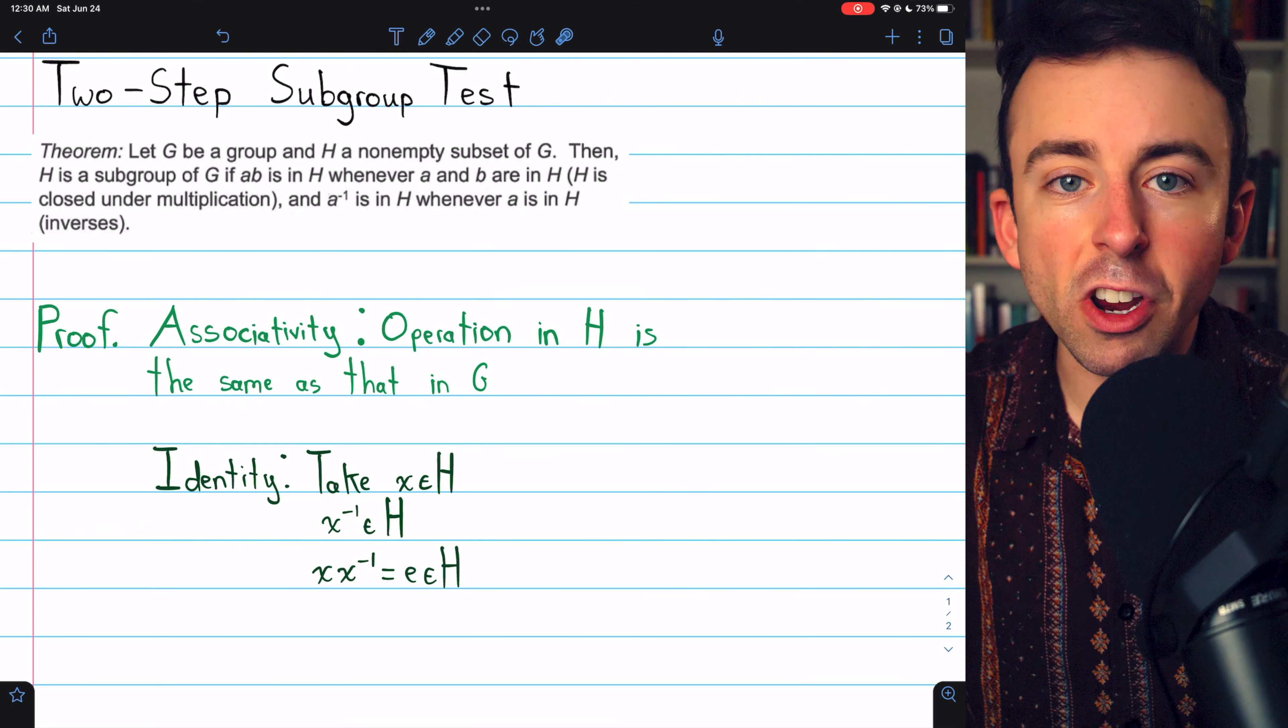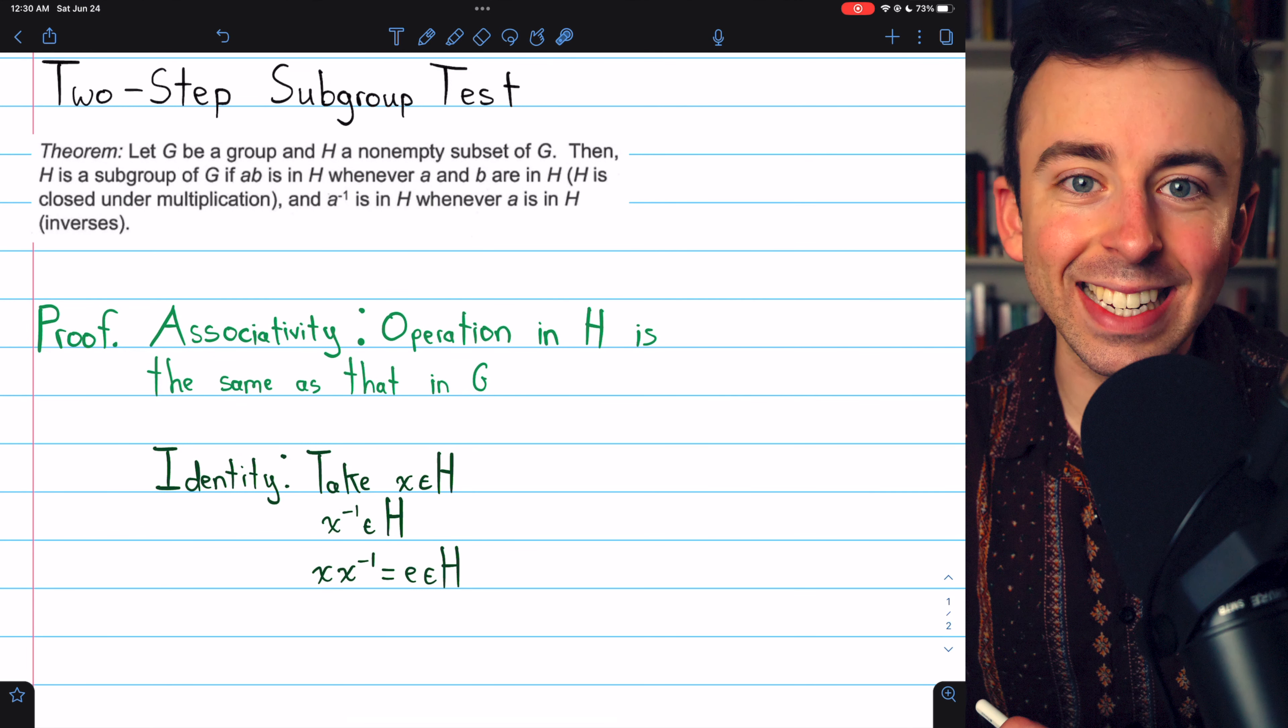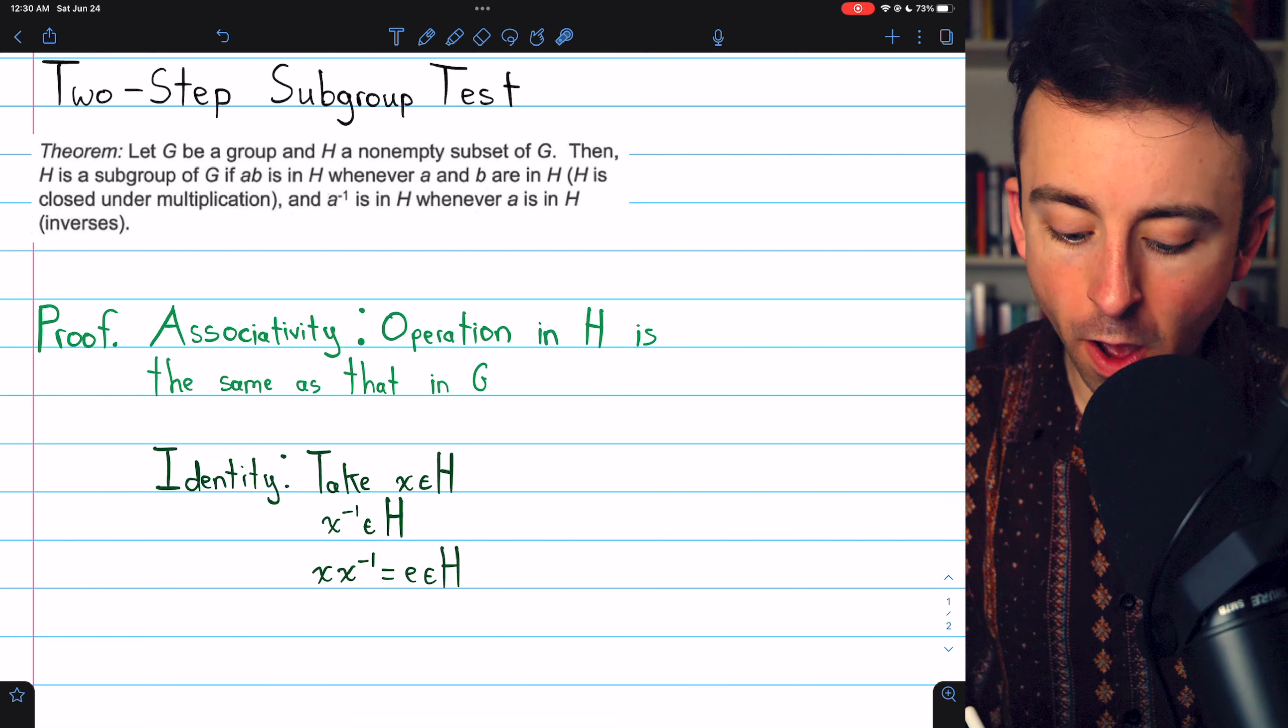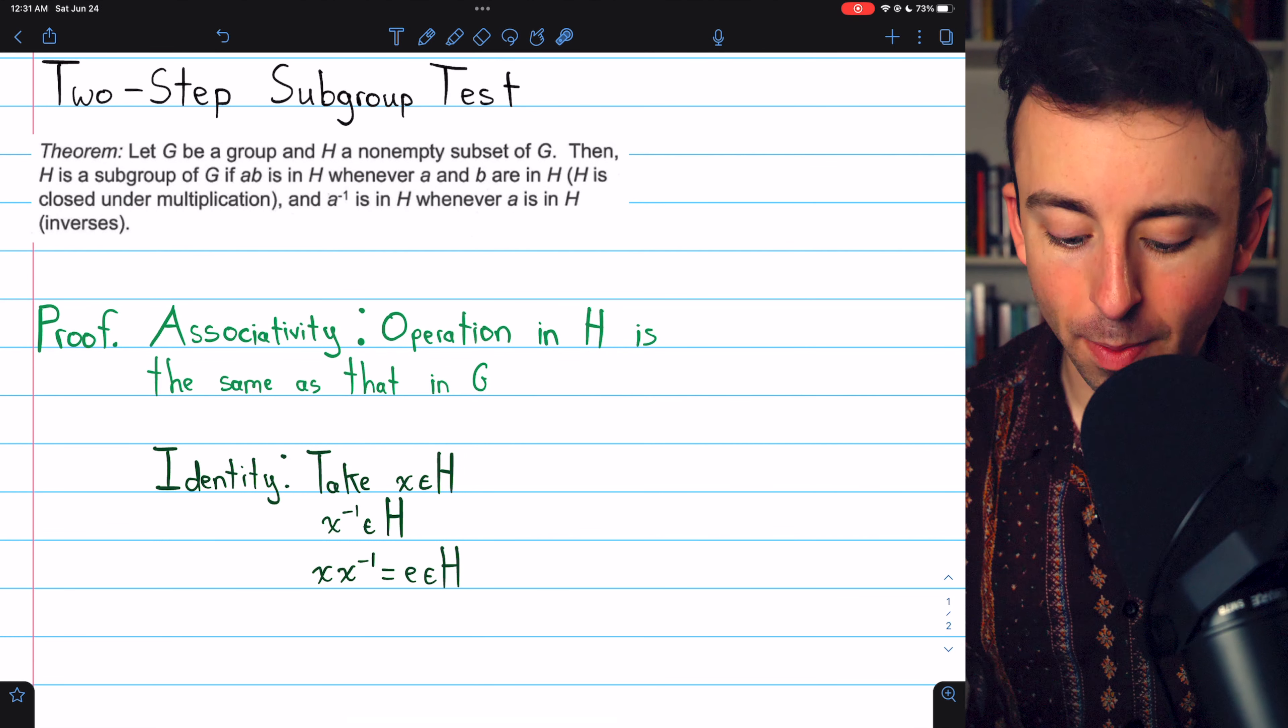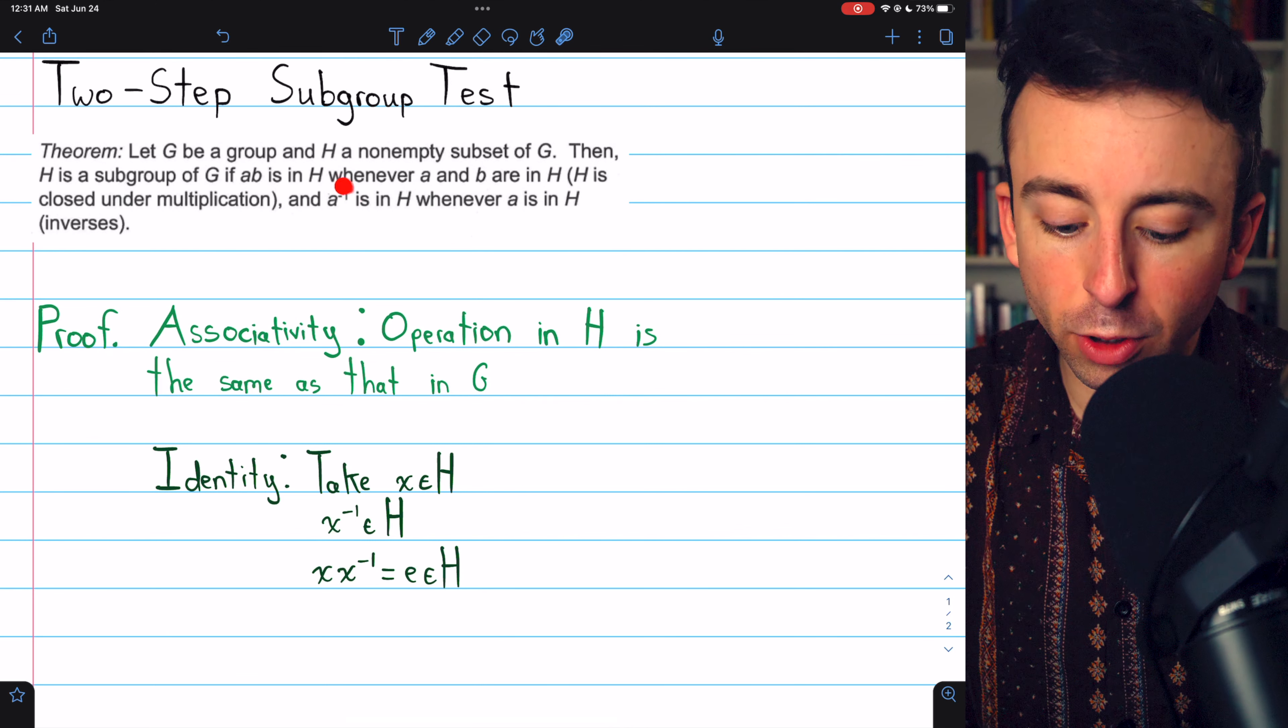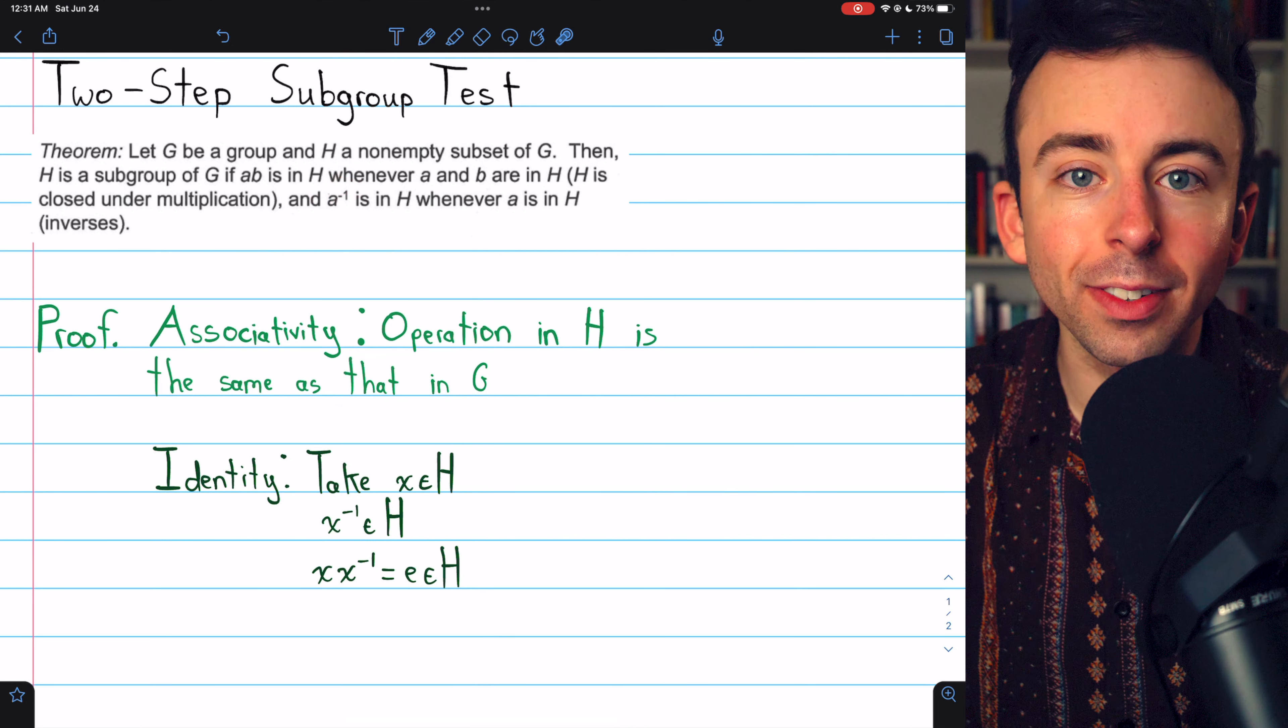Now we need to prove that H has an identity, and indeed it does because it's non-empty. So we can take an element, say x, from our subset H, and we're assuming that H is closed with respect to inverses.